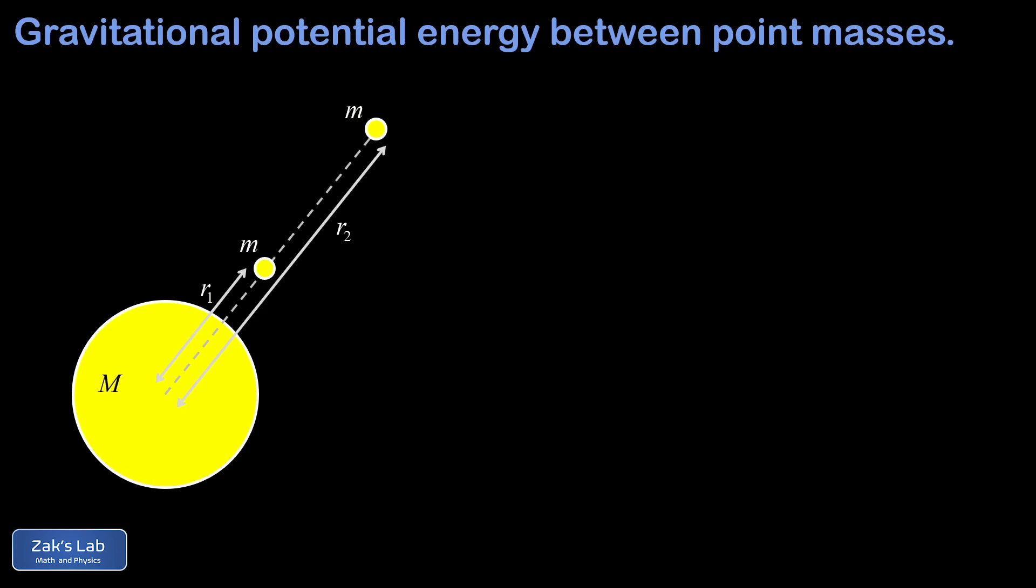Once we compute that work integral, we'll be able to define our potential energy function. So to get things started, just a quick reminder of Newton's law of gravitation: the magnitude of the force of gravity is given by big G, the universal gravitational constant, times the product of the two masses, then divided by the separation distance squared.